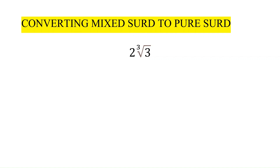To convert a mixed surd into a pure surd, take the example 2 cube root 3. This can be written as 2 into 3 to the power 1 by 3. For the 2, consider the denominator of the exponent, which is 3, so we write 2 as 2 to the power 3 by 3. Then we can take 1 by 3 as a common exponent, giving us 2 cubed whole to the power 1 by 3, times 3 to the power 1 by 3.